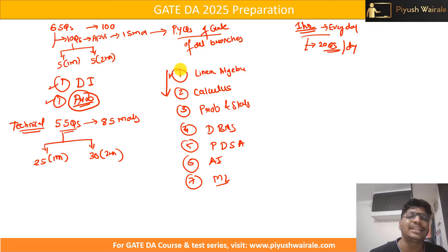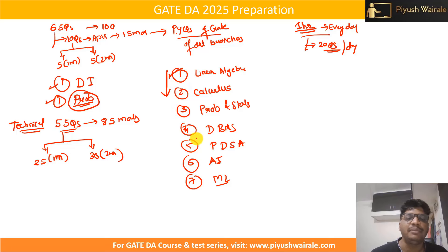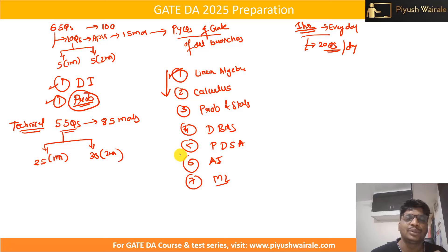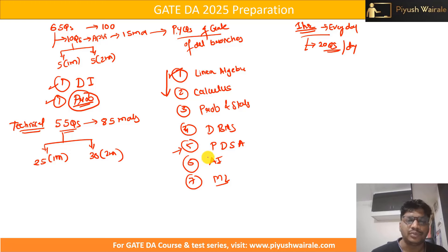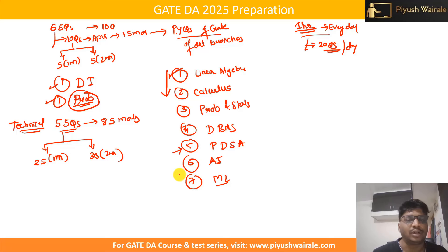First try to focus on linear algebra, then go for calculus, then probability and statistics. Once you complete the maths portion, go for DBMS and PDSA, and then AI or ML. I suggest going through the PDSA course before the AI course. If you have not taken my course, you can check my website — I have discussed all subjects in detail with tutorials on all important topics.